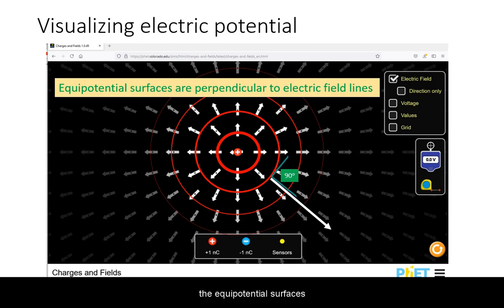the equipotential surfaces and the electric field are perpendicular to each other at all points.